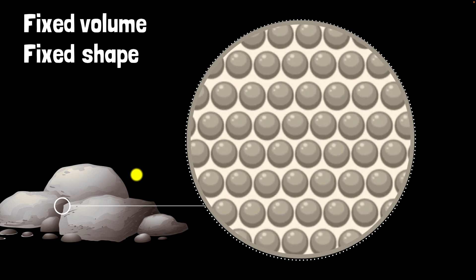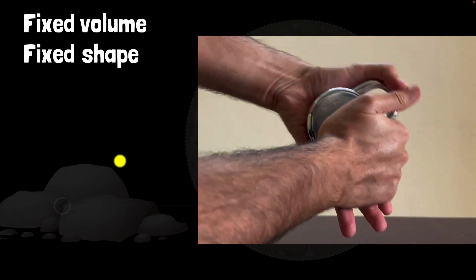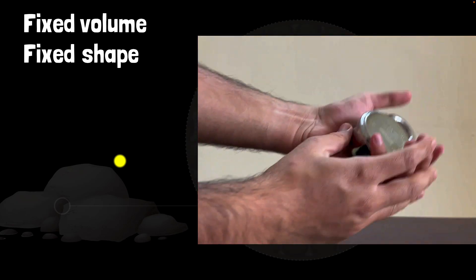That's why they have a fixed volume and they have a fixed shape. I mean, yeah, you can surely pick up a solid and move it from one place to another, or you can break it into pieces, but as long as you don't do that, they will have a particular shape and a particular volume. Another interesting thing about them is that if you try to squish it, like I'm trying to squish the rock, which is a solid over here, you can't.